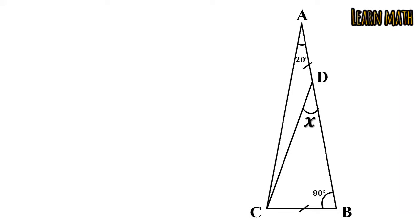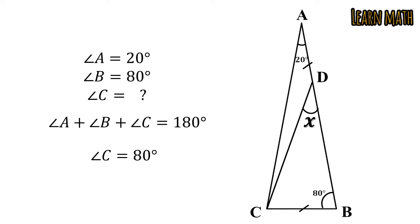In this question, we have to find the unknown angle X. According to the question, angle A is equal to 20 degrees, angle B is equal to 80 degrees. What is angle C? Sum of all angles in a triangle is equal to 180 degrees. So simply angle C is equal to 80 degrees. So the given triangle, triangle ABC, is an isosceles triangle.